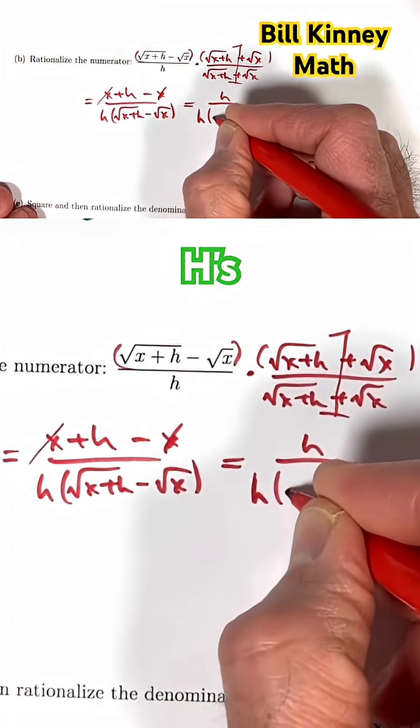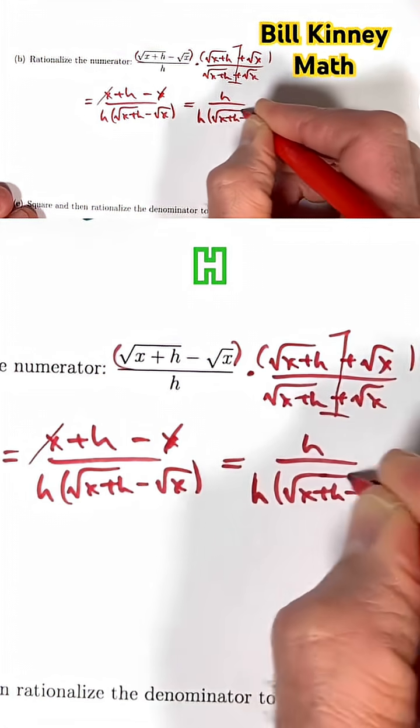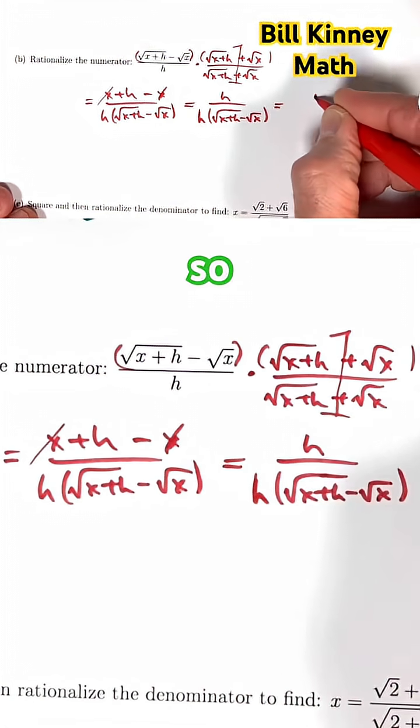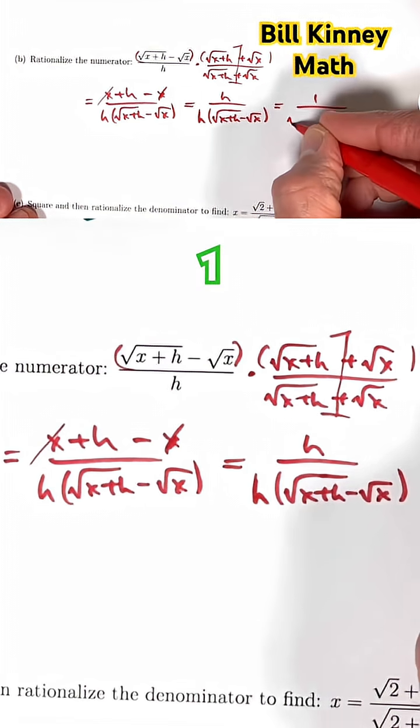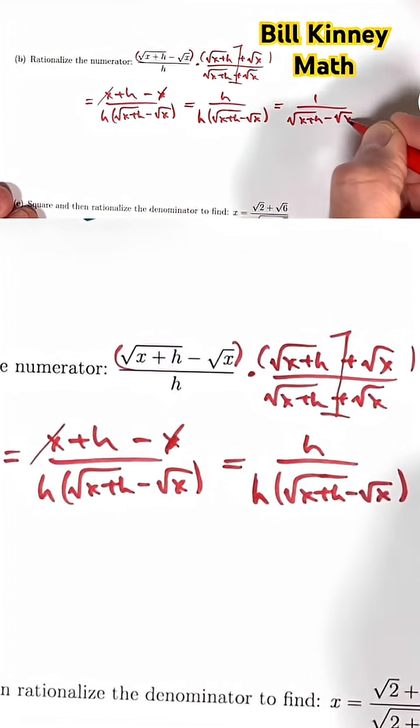And then those h's can divide out. They can cancel. h divided by h is one. So this ultimately simplifies to one over square root of x plus h minus square root of x.